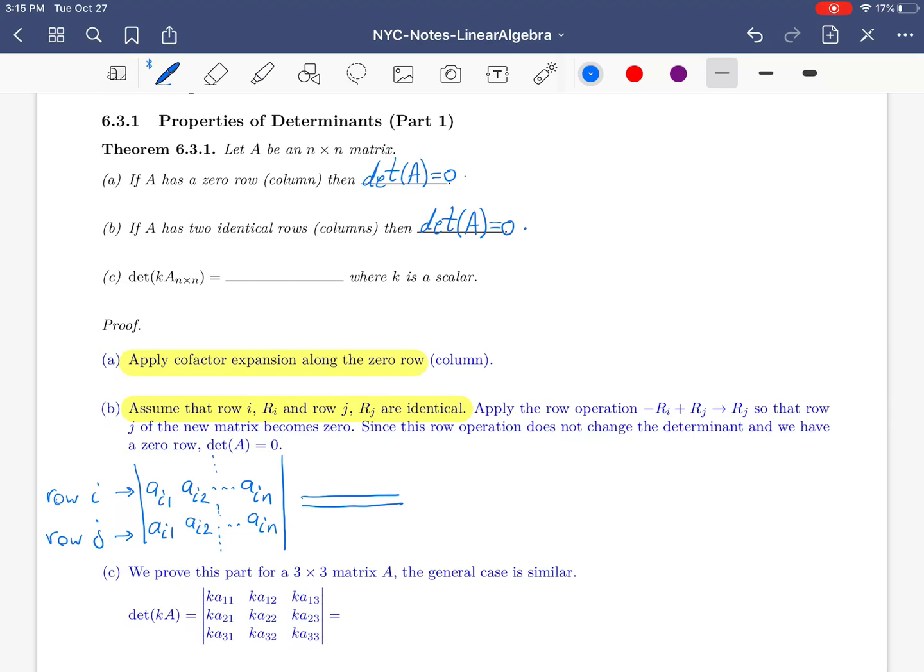Now, if you remember from the previous video, if we apply the third type row operation, then the determinant will be unchanged. So this becomes Ai1, Ai2, AiN, and then row j becomes 0.